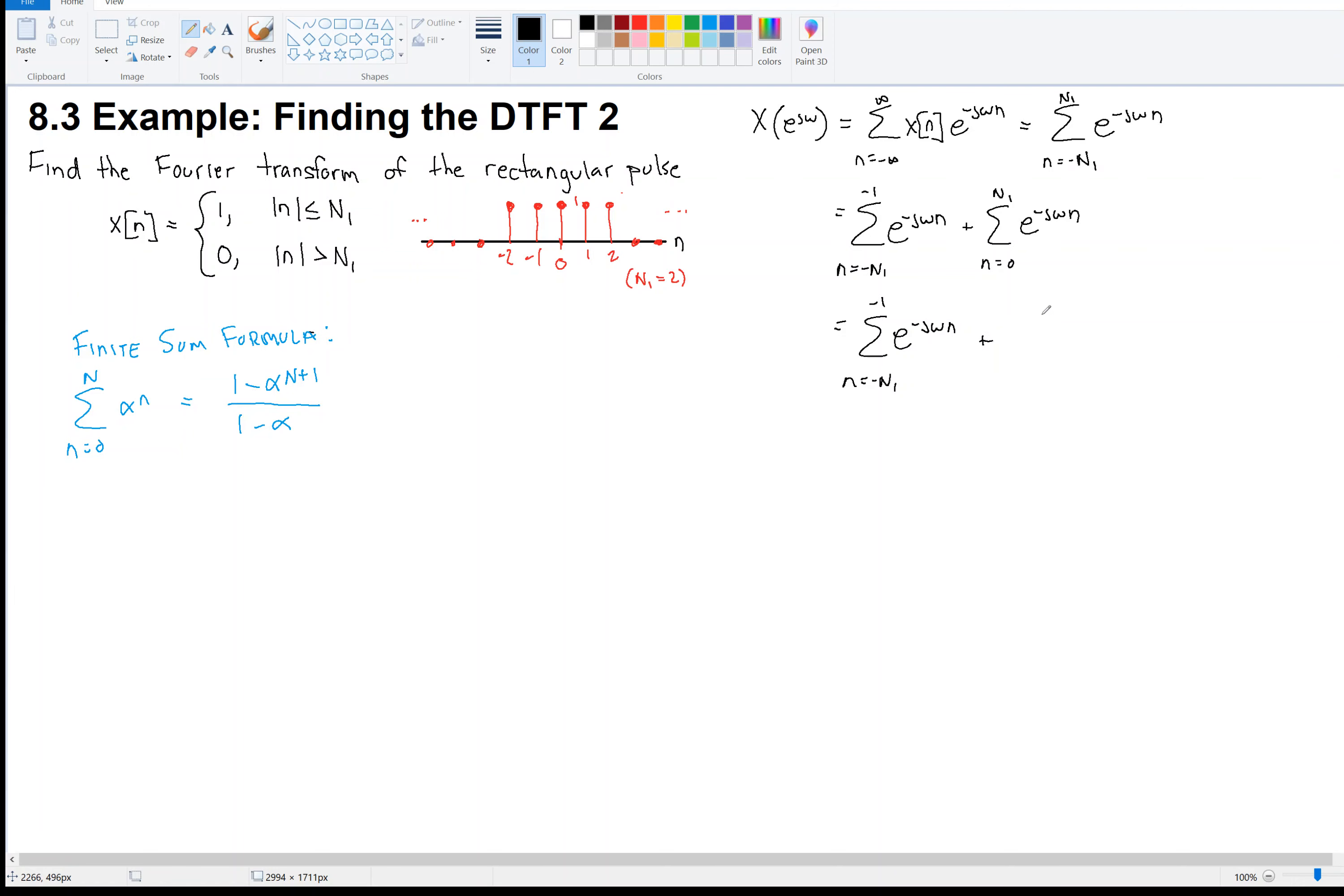So this becomes plus, then 1 minus e to the minus j omega to the upper bound plus 1. So the upper bound is n1 plus 1 over 1 minus alpha, 1 minus e to the minus j omega. So, okay, we've got that sum. Now, what are we going to do for this thing? Well, we only can use the finite sum formula. So we have to get this sum into that form. And so this thing goes from 0 to some upper bound. So the first thing I might want to do is try to switch the bounds. So to bring the 1 down to the lower bound. So what I'm going to do is use a change in variables.